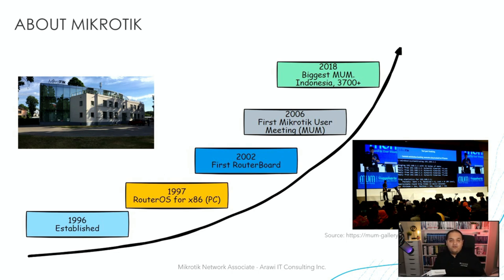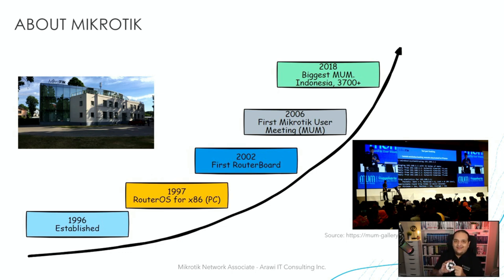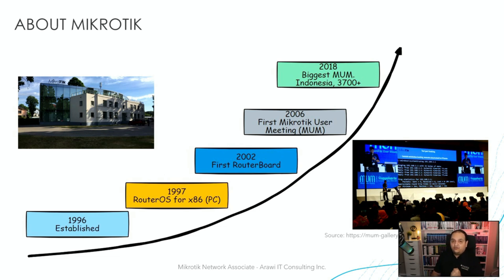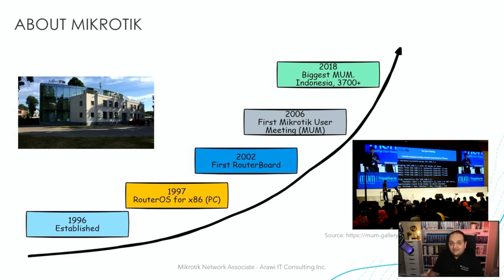There are different form factors. For example, this model is the CCR 2004, but there are several different form factors. This is a pretty small device that we can install on the ceiling, called a CAP lite — it is also a router board with RouterOS installed on it. One of the main advantages of MikroTik over other vendors is the flexibility of the operating system. RouterOS is going to be the same operating system across all the different products, whether something cheap under $50 or a router priced at $3,000. The operating system is exactly the same and we have the same features available.